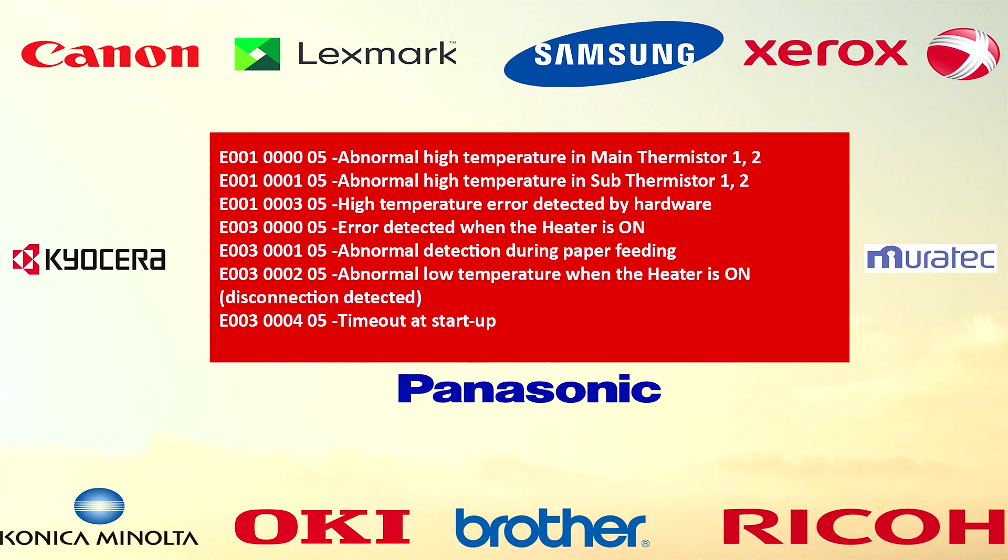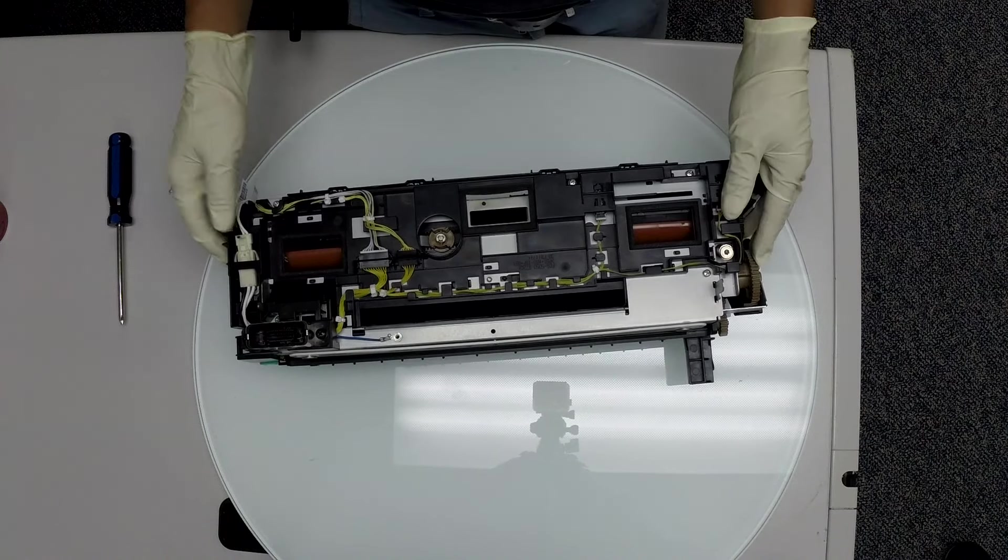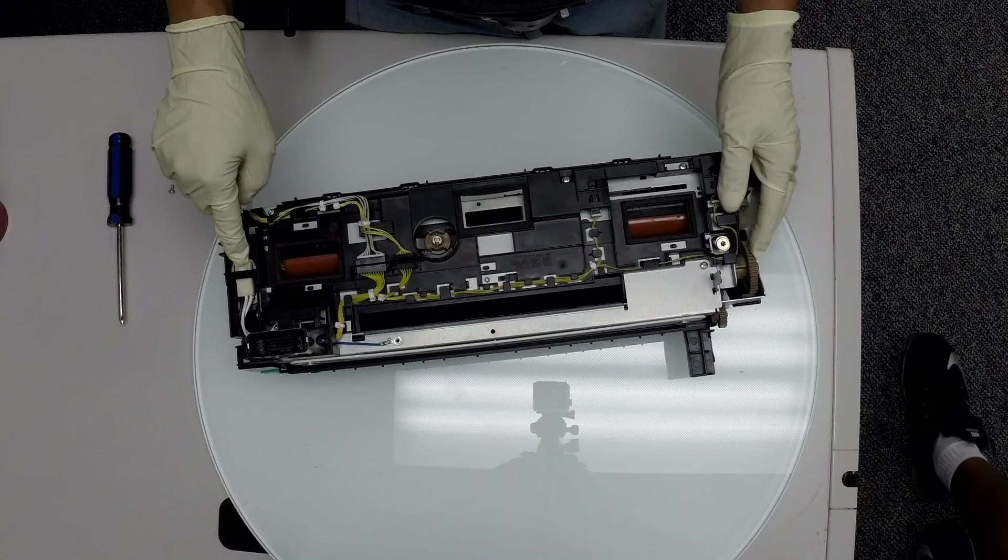You might have to change the fixing film and the pressure roller if you're getting any of the following error codes on the screen. Make sure there's no paper or foreign objects stuck inside the fuser unit. If you just removed the fuser, the fuser will be hot so give it five to ten minutes to cool down.